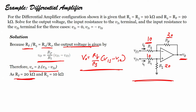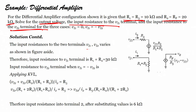As Rf equals 20 kilo-ohms and R3 equals 10 kilo-ohms, the input resistance to terminal Vi1 is nothing but R1 plus R2. R1 is 10 kilo-ohms and R2 is 20 kilo-ohms, so the input resistance to terminal Vi1 is 30 kilo-ohms.